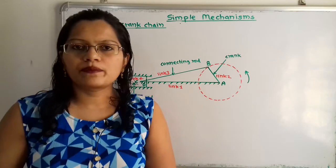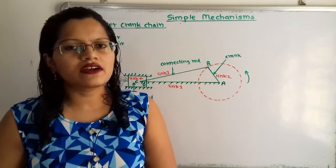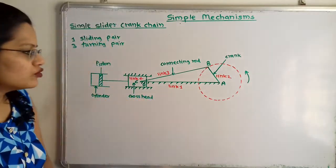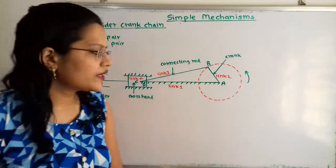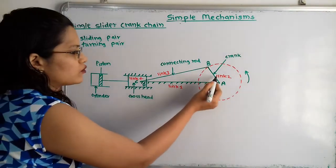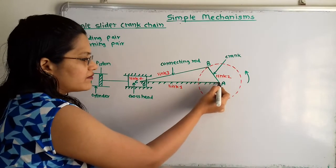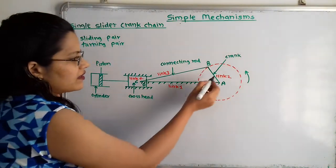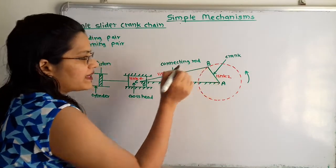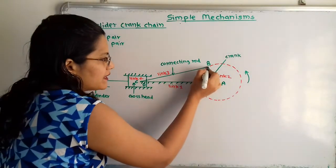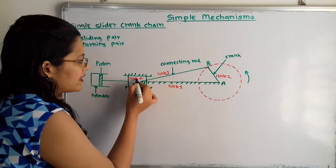A pair means the point which is connected by two links. Link 1 and link 2 are connected by point A, so this is a turning pair. Similarly, there is pair B, which is also a turning pair.